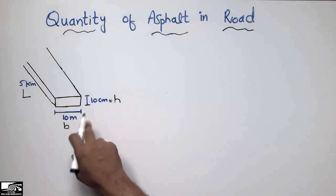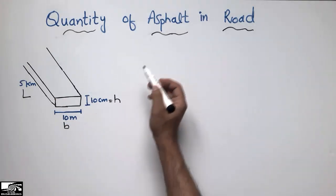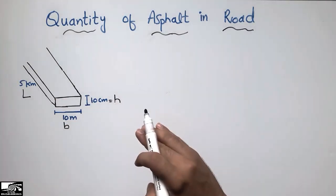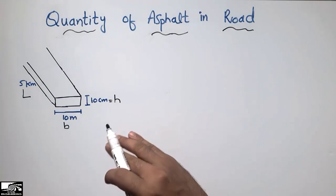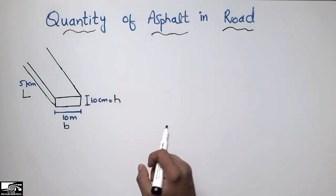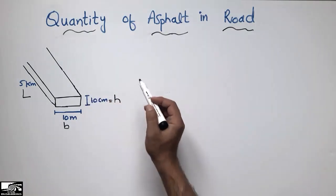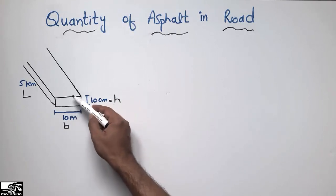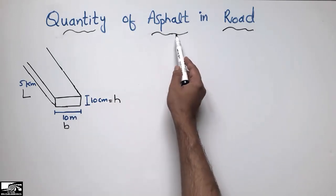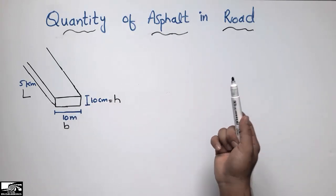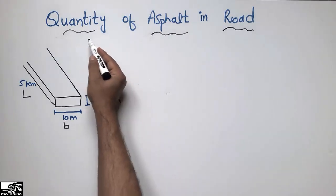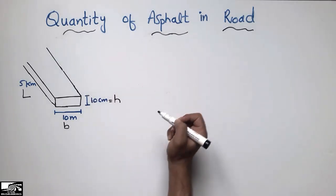Asphalt is the top layer of the road, provided for smoothness, friction, and drainage purposes. When asphalt is used, we call the pavement flexible pavement.